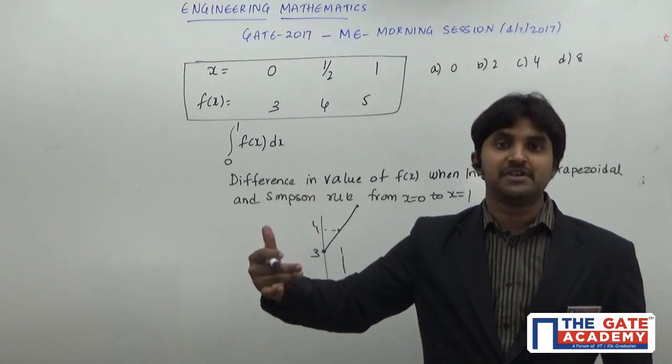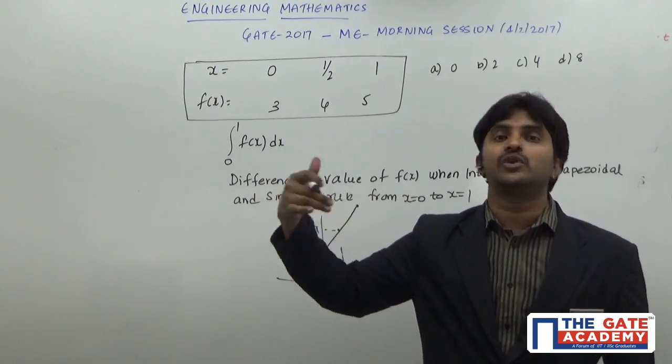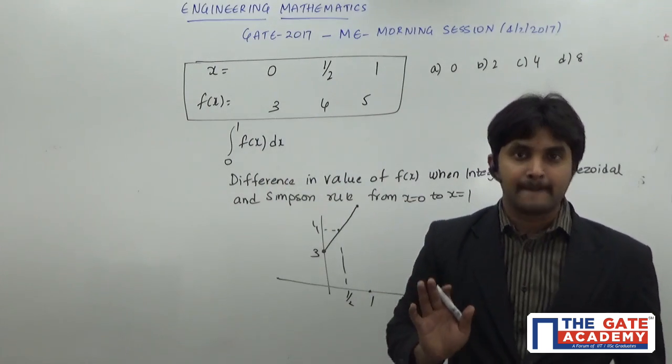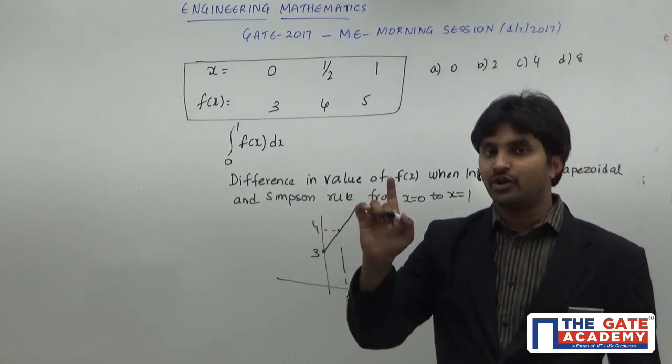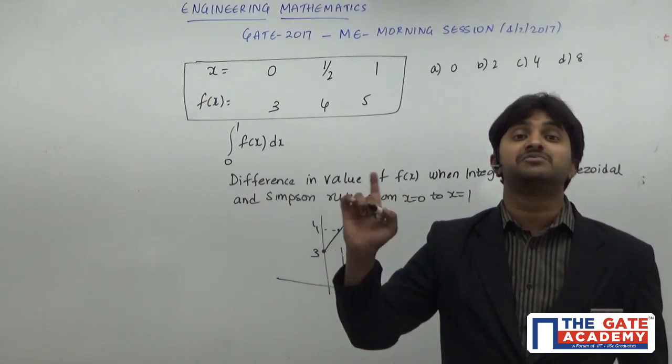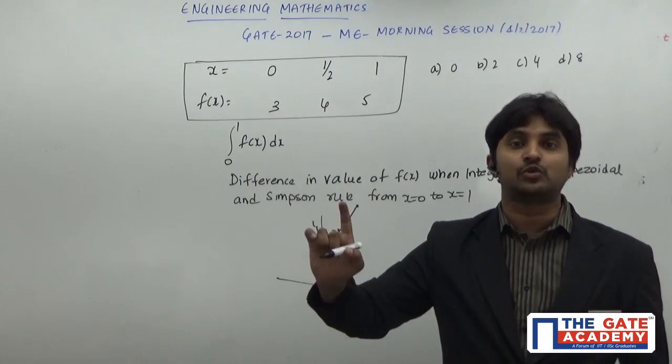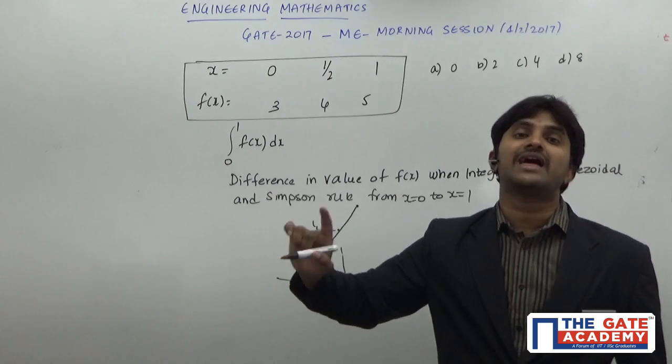Generally what we know, Simpson's method is going to be more accurate when compared to the trapezoidal method. But when you are integrating a line, whether you are doing the trapezoidal method or the Simpson's method, the value that you are going to get is going to be same. And that will be equal to the actual value.